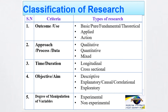The final criterion used to differentiate or classify research is the degree of data manipulation, or the degree of manipulating variables. As per the degree of variable manipulation, research can be classified into experimental and non-experimental.